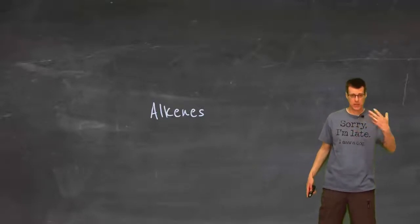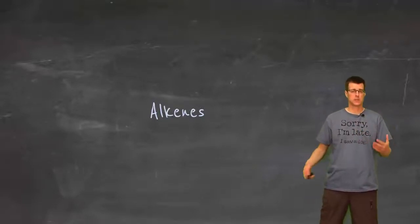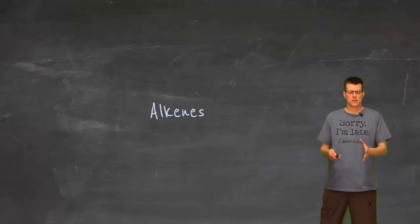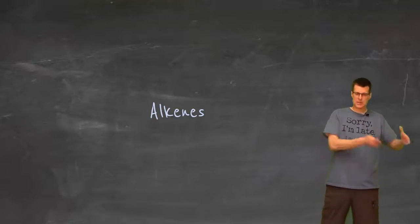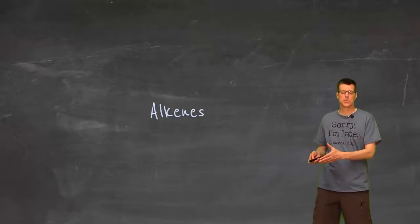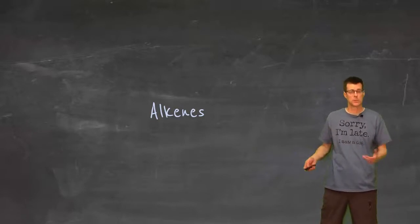So far what we know is alkanes, cycloalkanes, and alkyl halides. We've got a pretty solid understanding of how organic compounds are put together. We also know about functional groups, so we know what an alkene is. What we want to do is step back a little bit and then grab hold of alkenes and move forward.